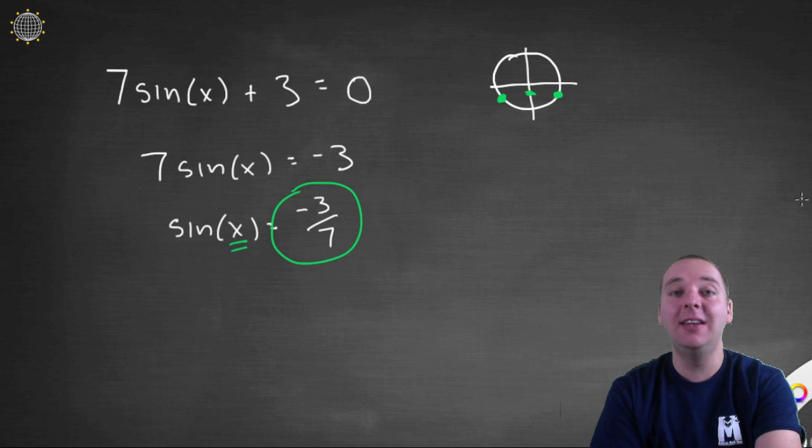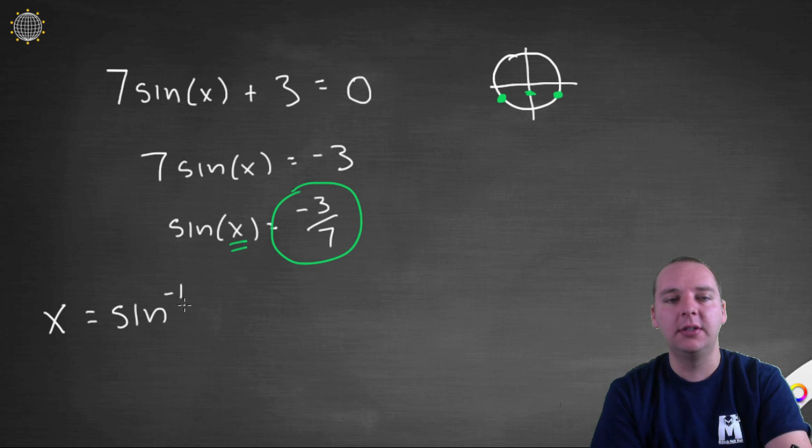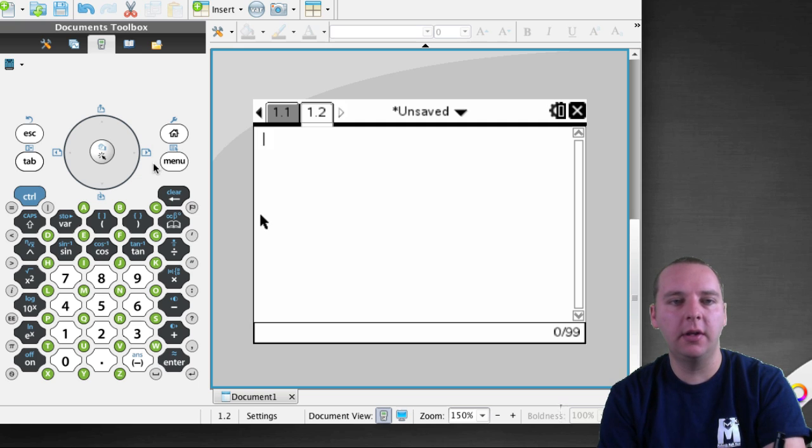Well, here's where inverse trig functions can be extremely helpful. We can pull out our calculator and we can say that x equals sine inverse of negative 3 over 7. Now, let's pull out our calculator. Here we have our calculator up and so we need to evaluate sine inverse of negative 3 over 7.